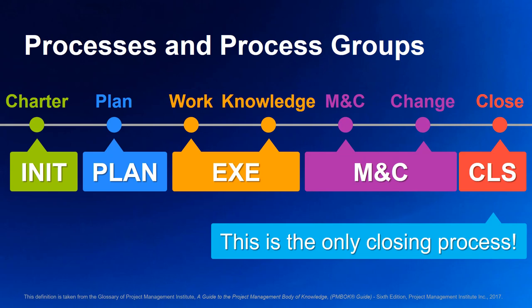Think of these seven processes as the lead chair in the sections of an orchestra, each playing their parts at just the right time as conducted by you, the project manager. For instance, the develop project management plan process leads the planning process section, ensuring that all the other 23 processes in the planning process group are properly coordinated and executed.